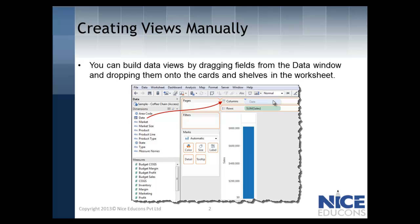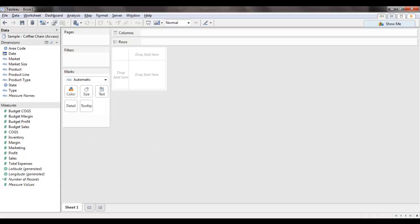Let us quickly see how to create views manually. I have already created a new sheet in Tableau and connected to the coffee chain access data. As you can see, the data pane displays a list of dimensions and measures.